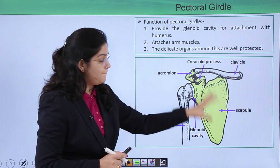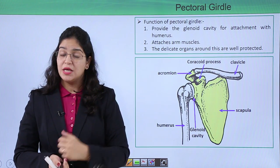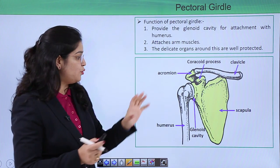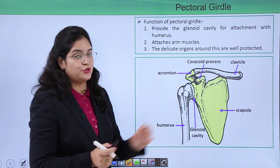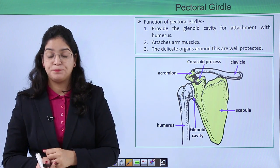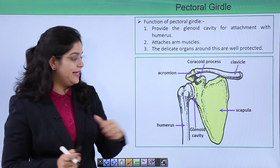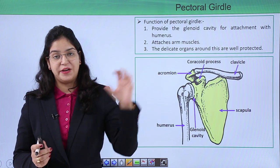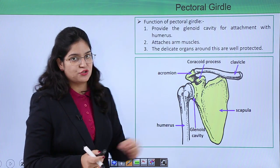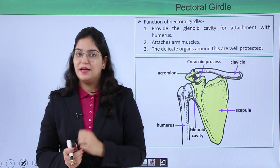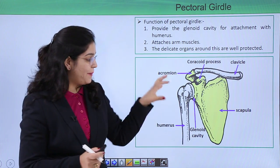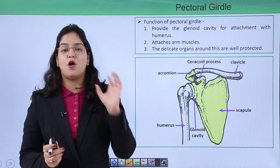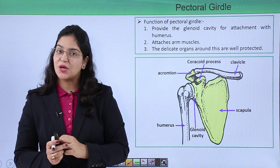The most important function of the pectoral girdle is to attach the arm to the axial skeleton. It also attaches different muscles through its various structures. A third function is that it protects the organs around it.